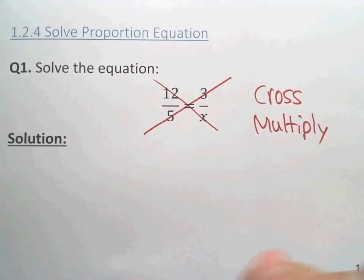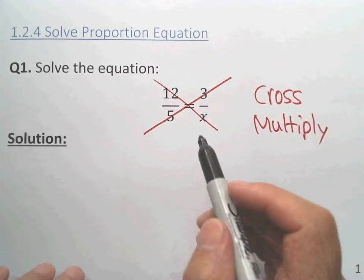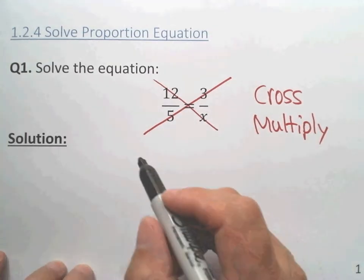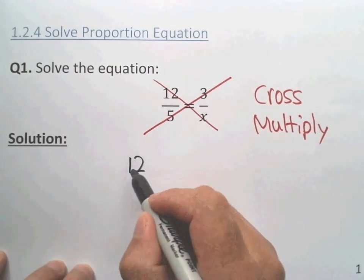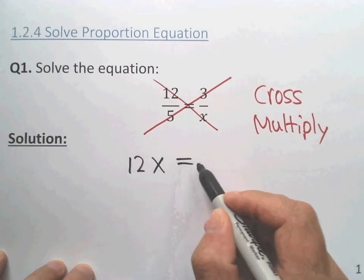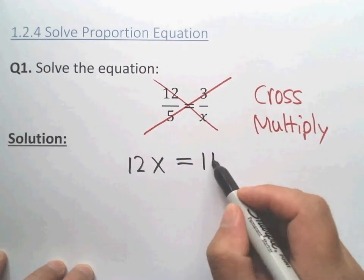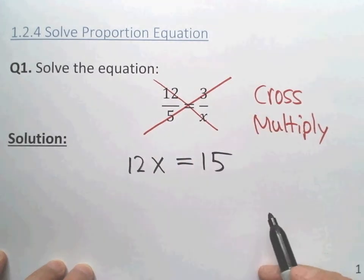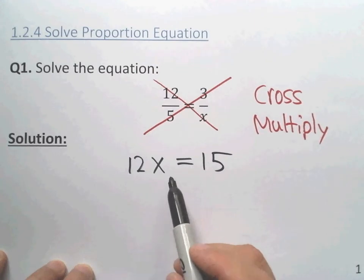After the cross, 12 times x equals 3 times 5, which is 15, right? And this is a linear equation, the simplest equation. How to solve? Divide by 12 both sides.